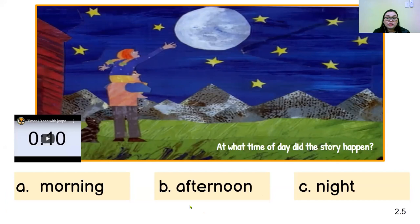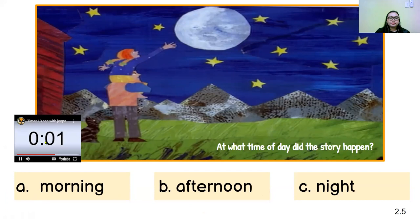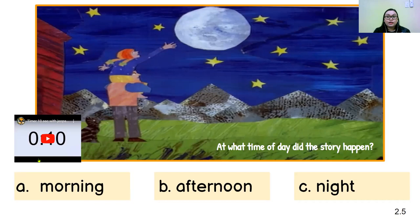At what time of day did the story happen? A, morning; B, afternoon; or C, night. The correct answer is C, night. Why? What's your proof that it happened at night time? A, because there's the moon; B, there are stars; and C, it is dark.